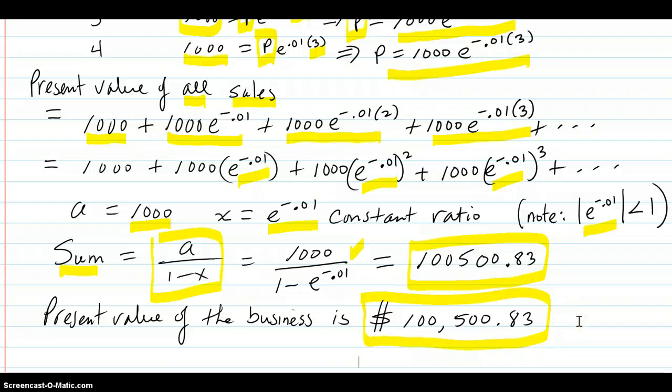In other words, this money right here is the amount that if you put it in an account right now in the present with all the interest that it would accrue staying in there continuously, it would amount to the same money as if you were making $1,000 every year with the interest that it would accrue.